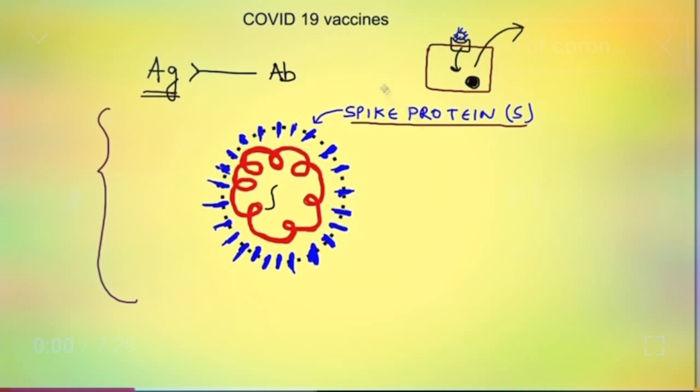So basically if our body is trained beforehand to generate an immune response against these spike proteins it can mount a very good immune response against the pathogen when it actually enters into the body. So our immune system will recognize these spike proteins and fight against it hence the virus will not be able to enter into the cells and all the events which will happen after that cannot occur. So how do we develop a vaccine against these spike proteins?